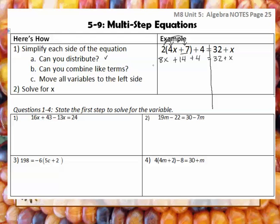Can I combine like terms? That's the second question I ask myself. Yes, I do have some combining like terms on the first side. I have a positive 8x, and then I also have a positive 14 and a positive 4 that are constants I can combine. They're already in the right order with the letters first, so I don't need to reorder anything. Positive 14 plus 4 gives me a positive 18, and that's all equal to 32 plus x.